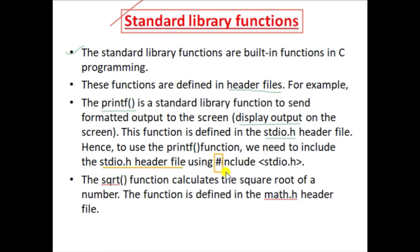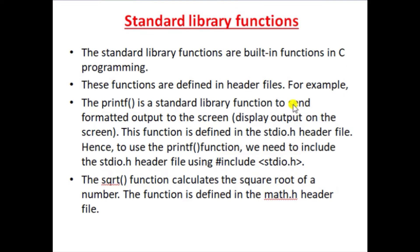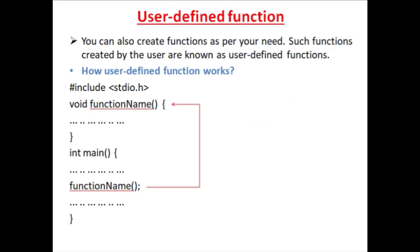Similarly, the sqrt() function calculates the square root of a number. Whenever we want to calculate a square root, we use the sqrt() function. To use it, we need to include the math.h header file at the top of our program. All mathematical functions are already predefined in math.h.